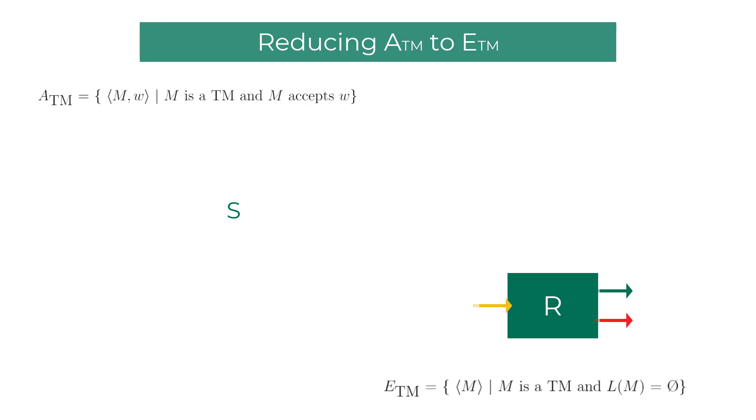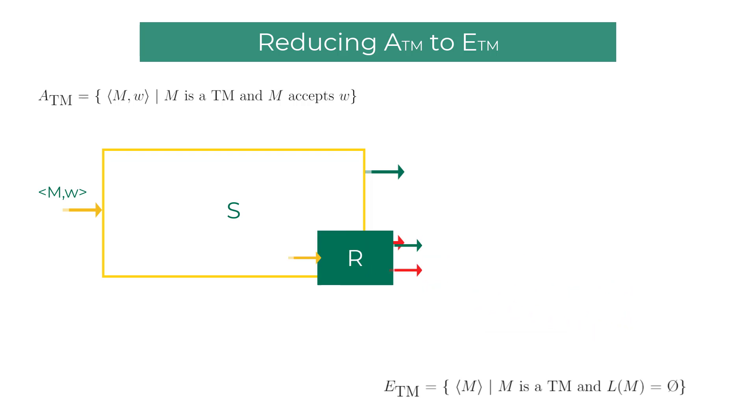Let's see if we can use the ETM decider R to build a decider for ATM. If the Turing machine M's language is empty set, R would accept it. If the language of machine M is empty set, there is no way that the Turing machine M would accept the string W. Quite obvious, right? That is why I will be connecting the accept state of ETM decider R to the reject state of ATM decider S.